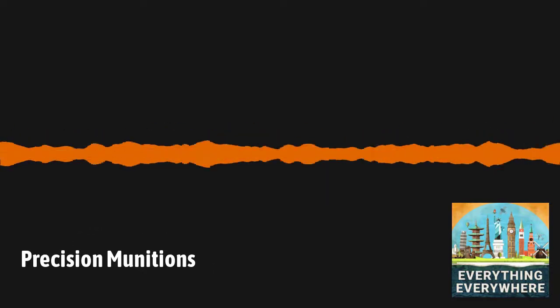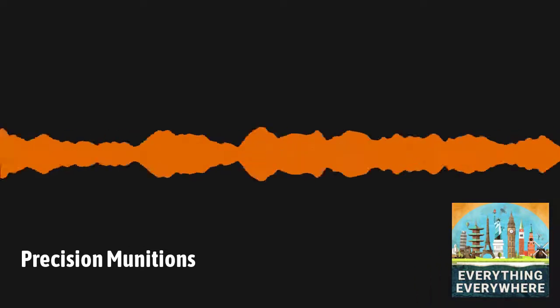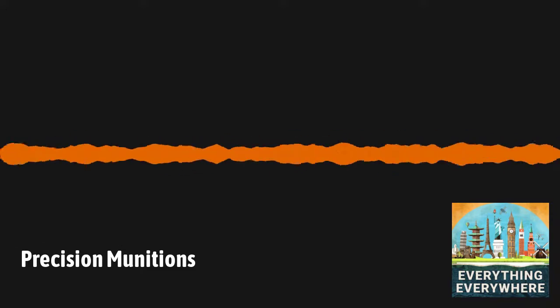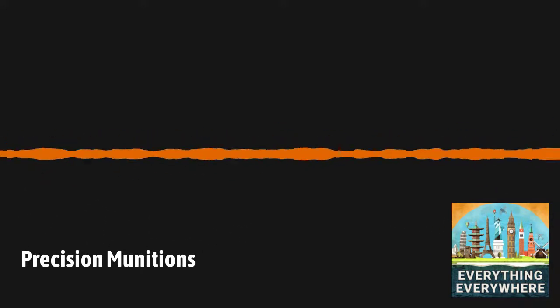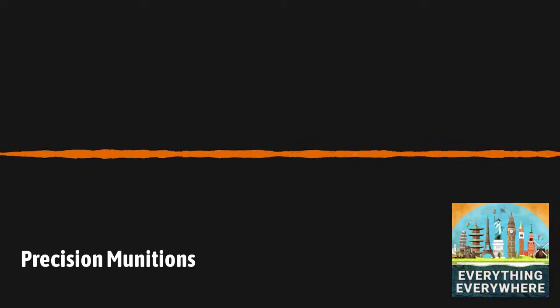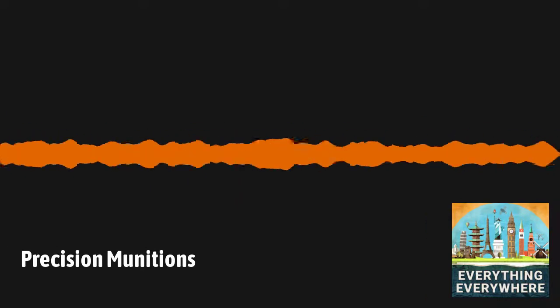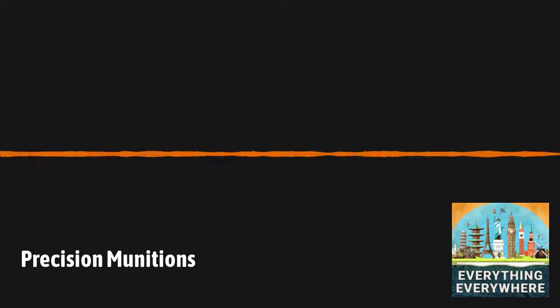Likewise, the AGM-45 Shrike missile was designed to lock onto radio waves to take out enemy radar. With the development of the laser in the 1960s, the military identified a possible method of guiding a bomb to its target that didn't involve a television camera. This led to the development of the Bold 117, the world's first laser-guided bomb in 1967.